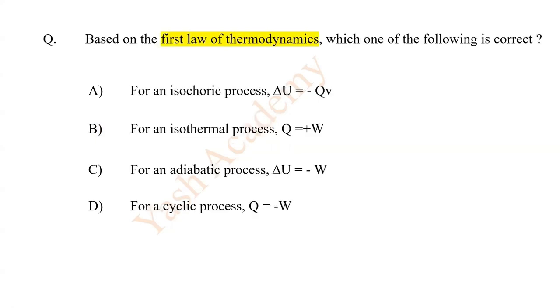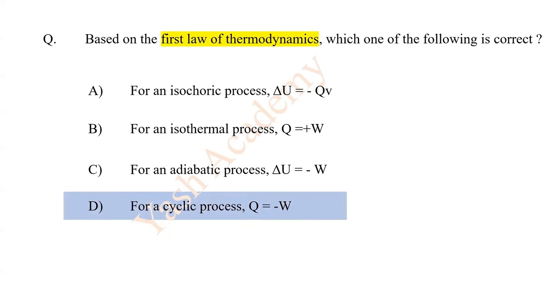Based on the first law of thermodynamics, which one of the following is correct? The answer is D: for a cyclic process, Q is equal to minus W.